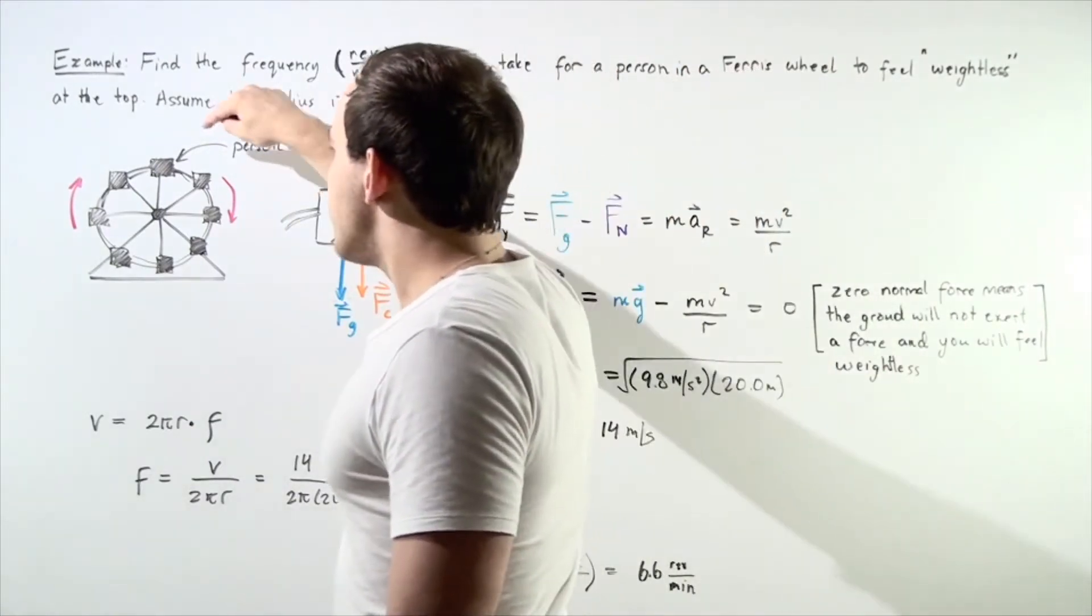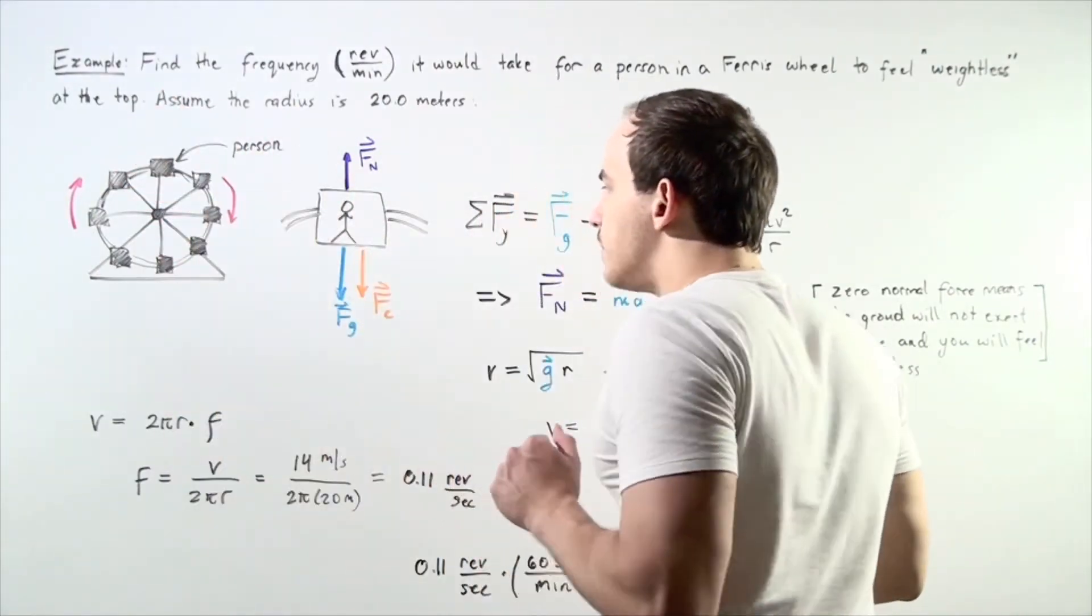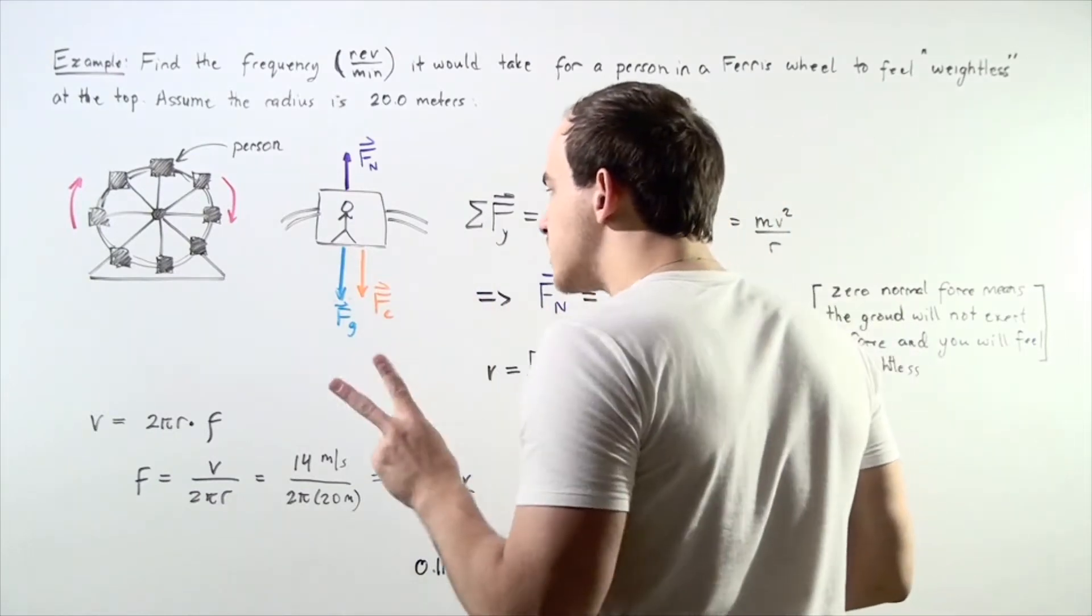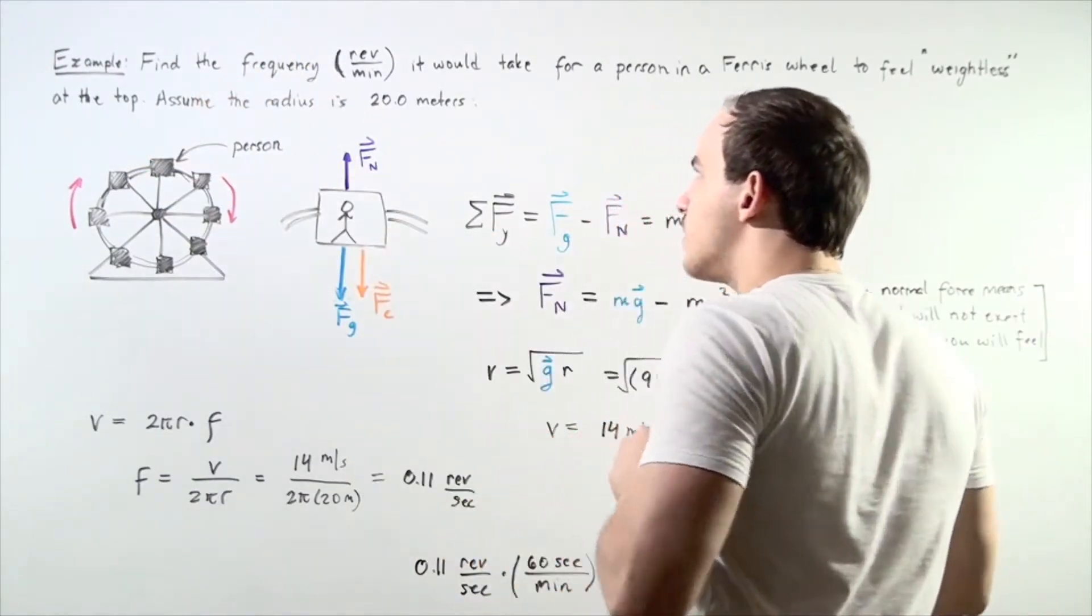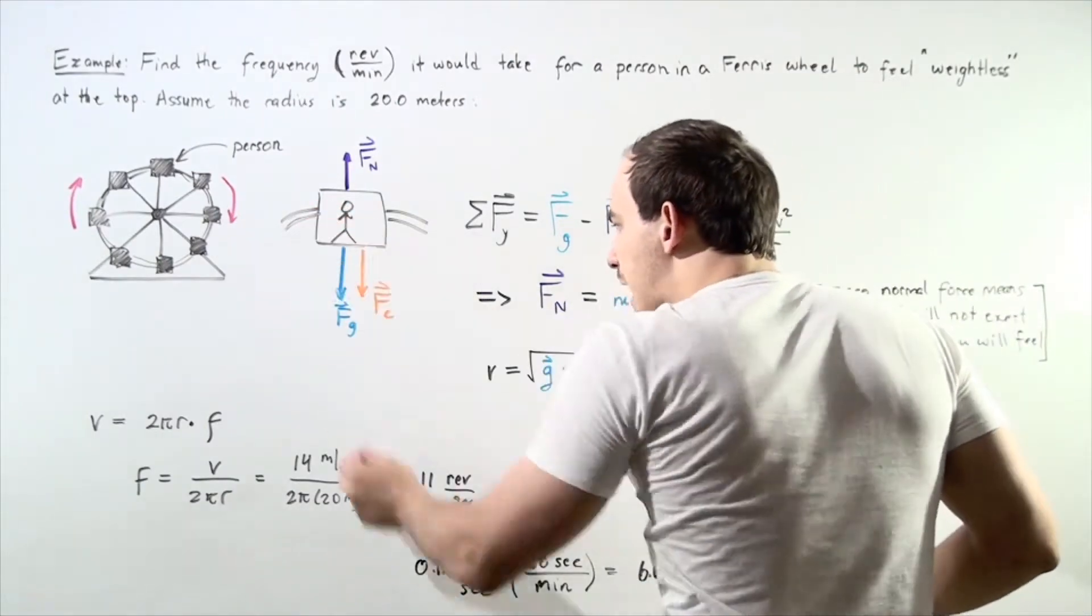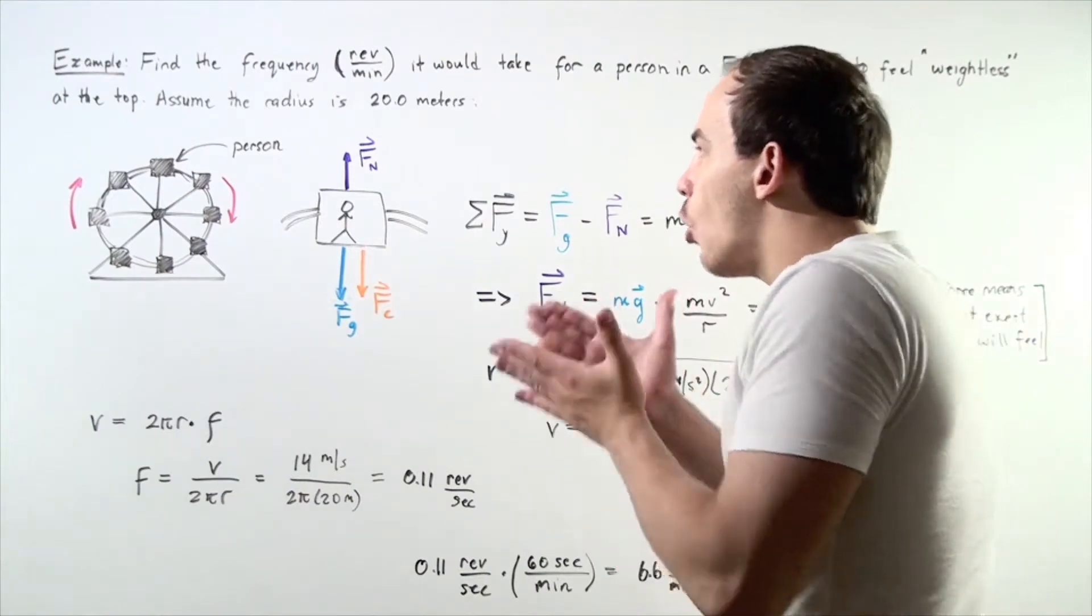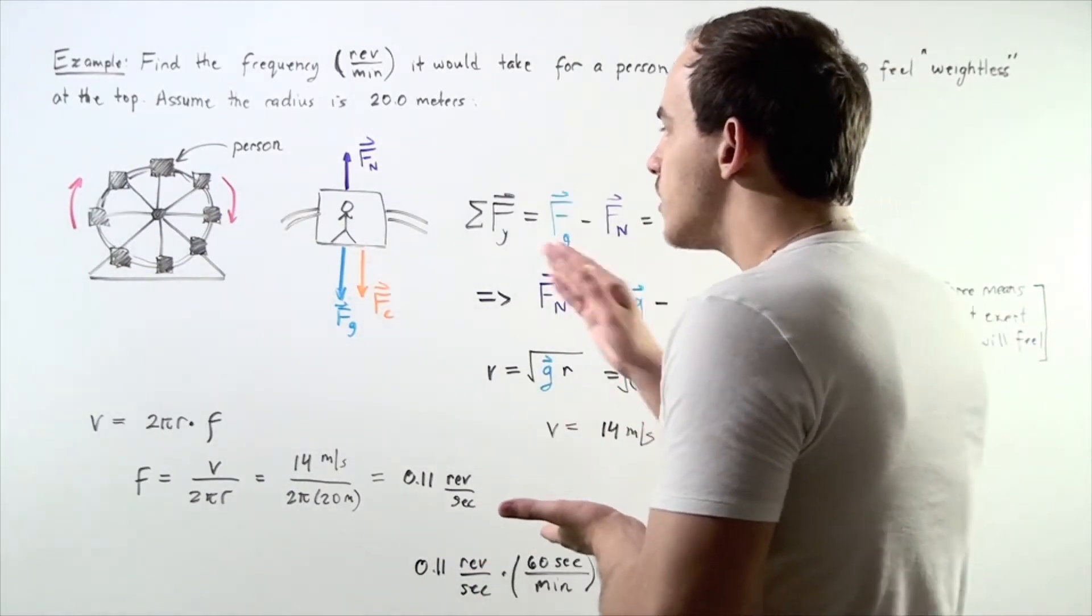Here we have the person at the top. We zoom in on that cabin and we find the following picture. Two forces are acting on the person at the moment on the top of the Ferris wheel. We have the force of gravity that's pulling downward on the person and we have the normal force created by the bottom of the cabin that's acting on the person.